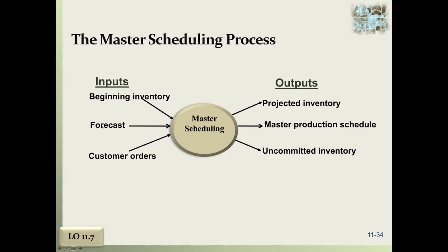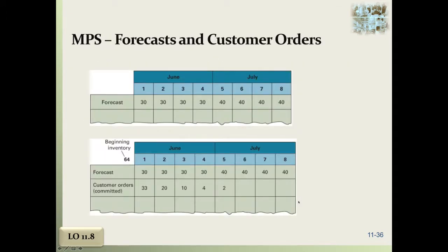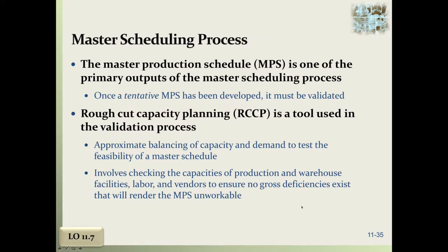Your inputs are your beginning inventory, your forecast, and your customer orders. Your outputs are your projected inventory, your master production schedule, and uncommitted inventory.